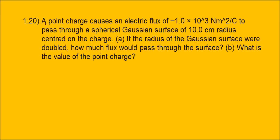Question number 1.20. A point charge causes an electric flux of minus 1.0 × 10³ Newton meter squared per coulomb to pass through a spherical Gaussian surface of 10.0 cm radius centered on the charge. If the radius of the Gaussian surface were doubled, how much flux would pass through the surface, and what is the value of the point charge?